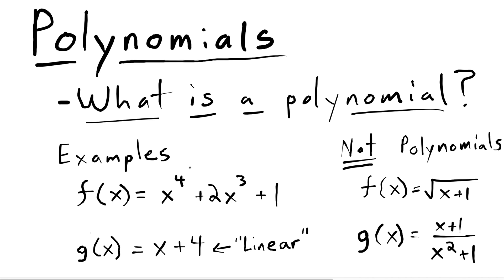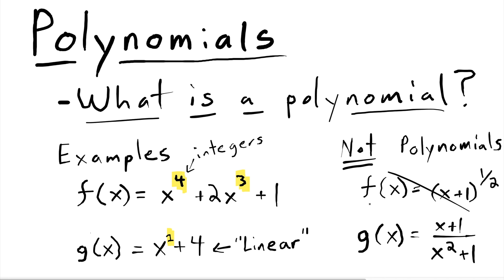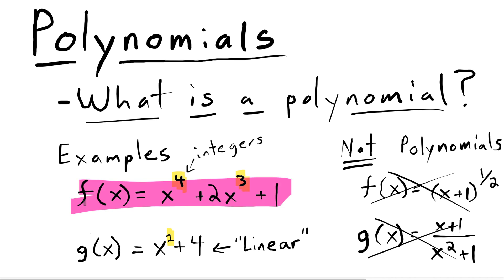Polynomials need to have integer exponents — these numbers have to be whole numbers. Something like the square root of x plus one is actually the same thing as x plus one to the one half, so that violates the rule and is not a polynomial. A function with a fraction in the denominator is not a polynomial either — that is called a rational function. This video will deal strictly with functions that look like polynomials.